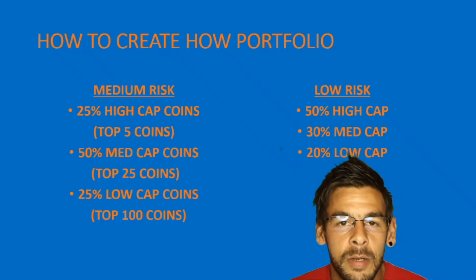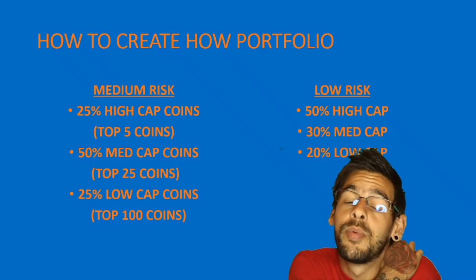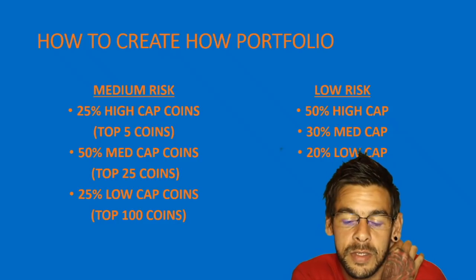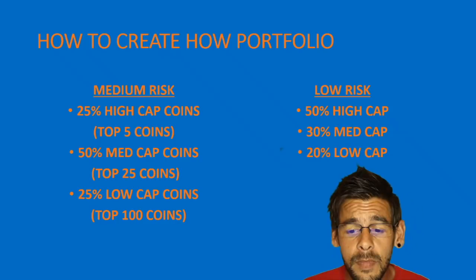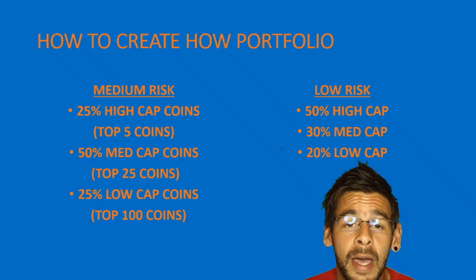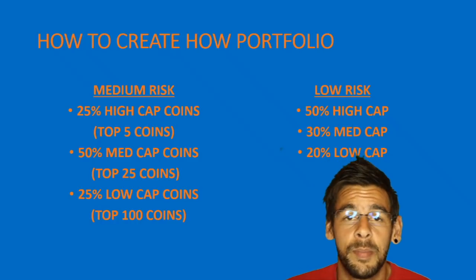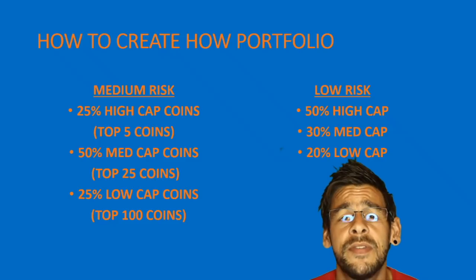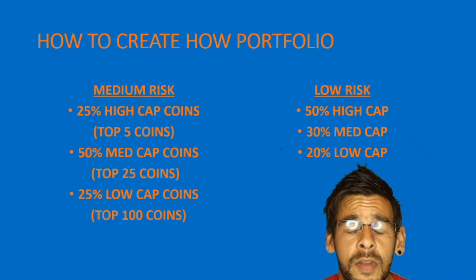The low risk option is something I would probably do if I was coming into the crypto market now. I would hold 50% of my entire portfolio in higher cap coins — for me personally, Bitcoin and Ethereum — and 30% of the portfolio in the top 25.